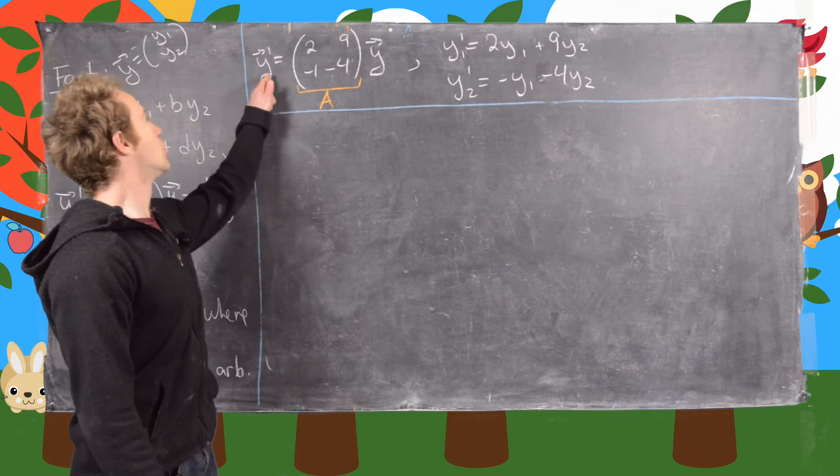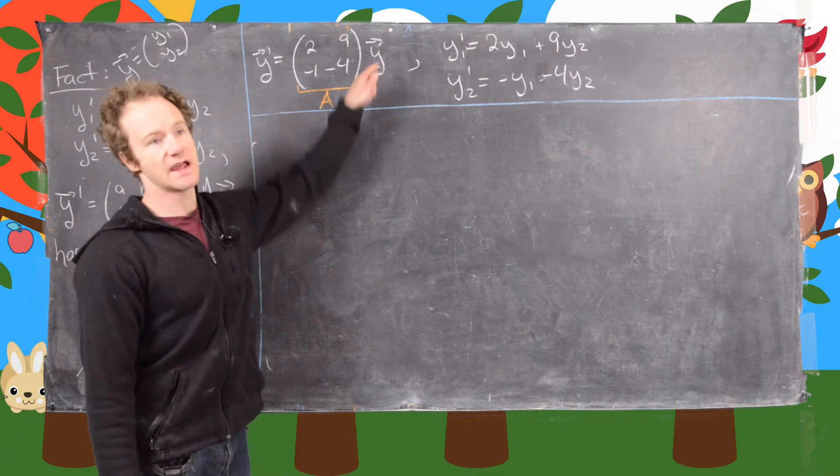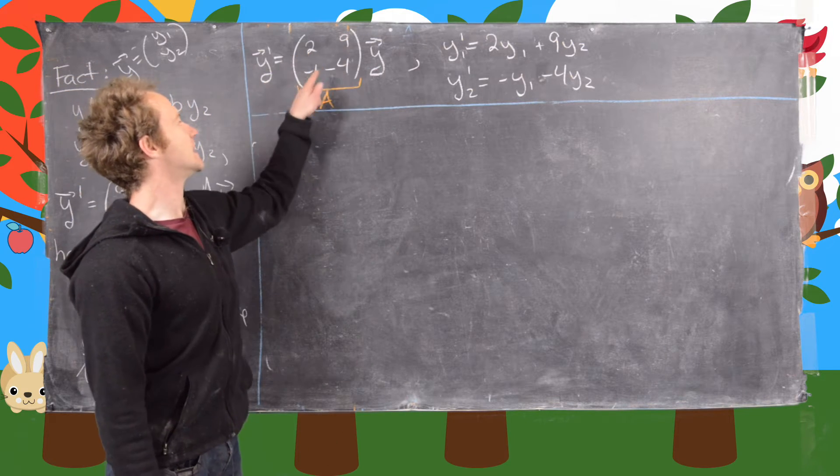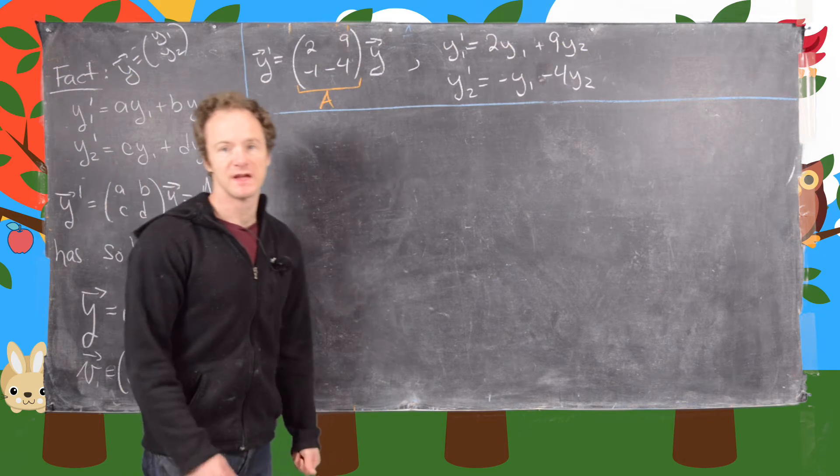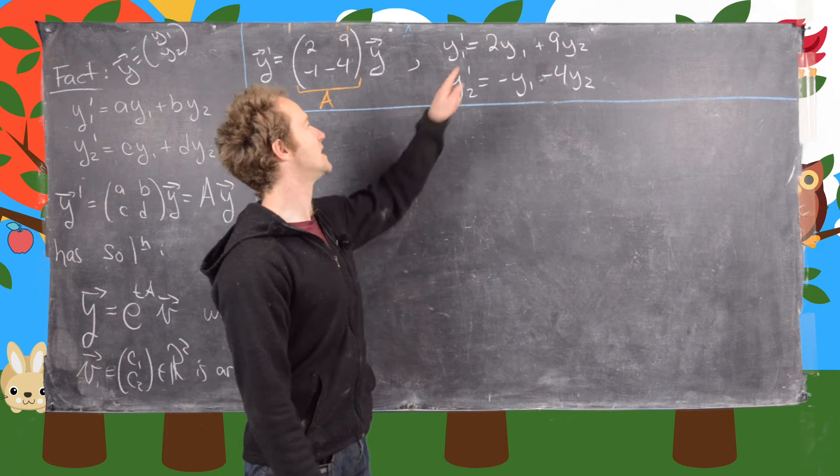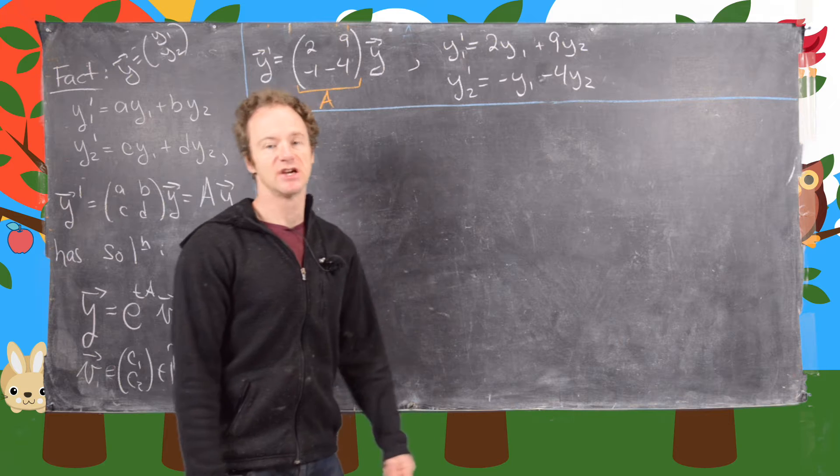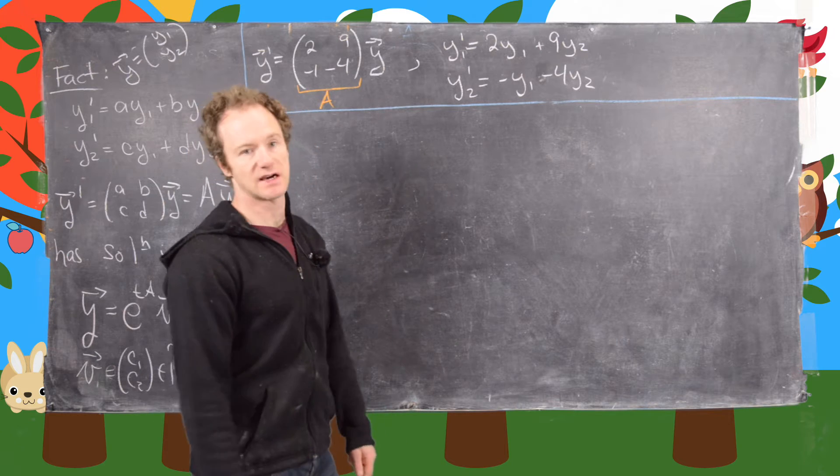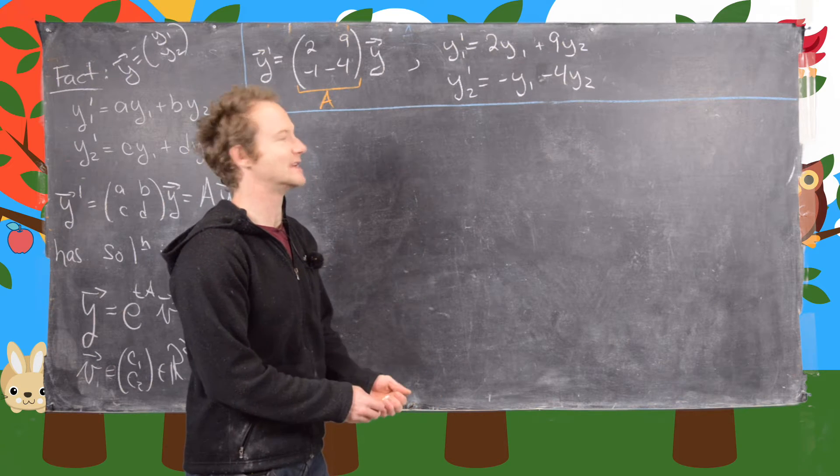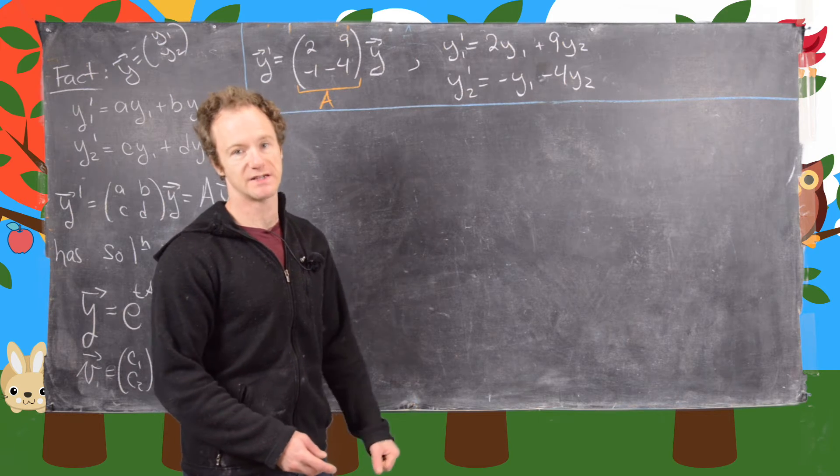So let's look, in this video we're going to look at y prime equals matrix A times y, where the matrix A is 2, 9, minus 1, minus 4. So that corresponds to the system of equations, y1 prime is 2y1 plus 9y2, and y2 prime is negative y1 minus 4y2.